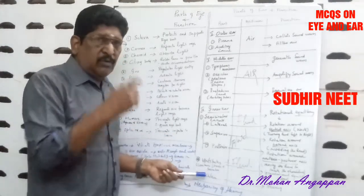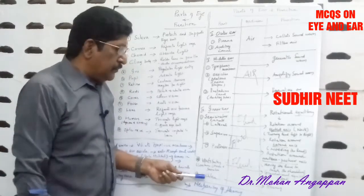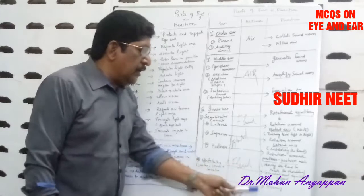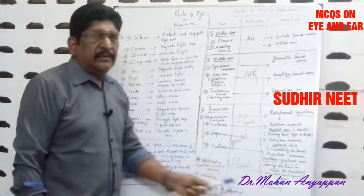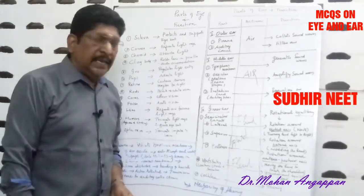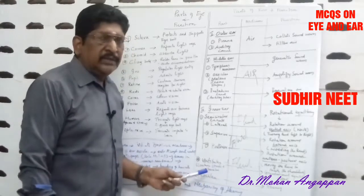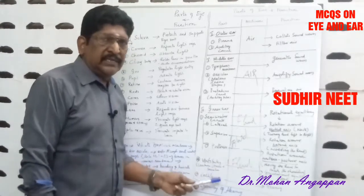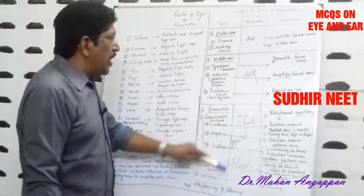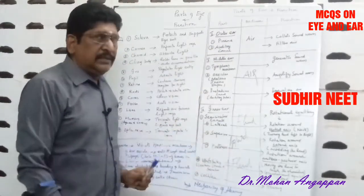And then cochlea, which is a circular canal. It is the organ of hearing — it is responsible for hearing. We have already seen the structure of the cochlea and the organ of Corti. These are the parts of the ear and their functions.